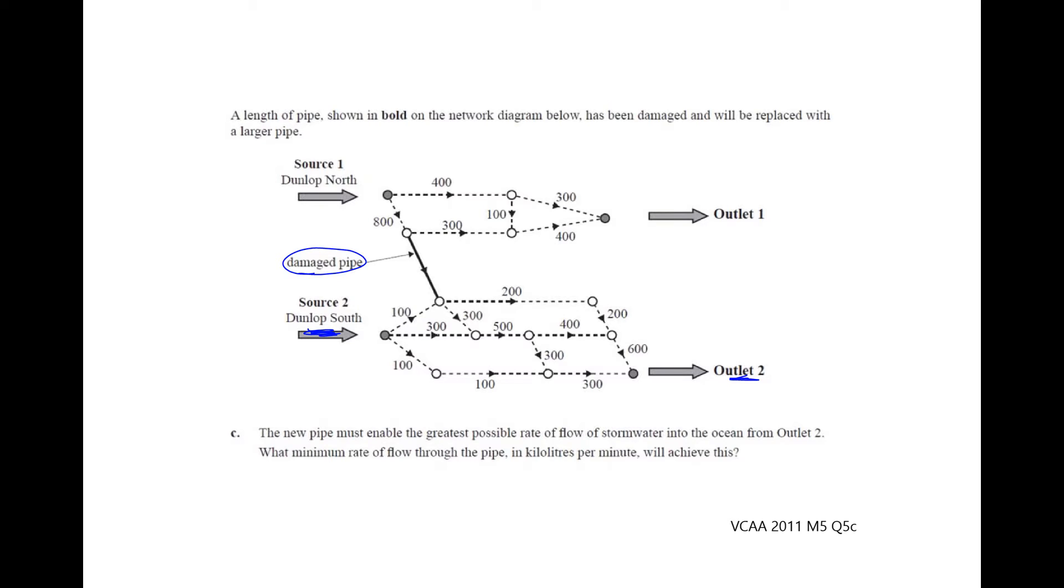Using our alternative method, we'll just work our way through with the pathways. So from source 2, if we go across the top, our smallest value there is 100, so subtract 100 from each of those values. And then a second pathway through, we can go through the middle, so across the 3, 5, 4, and down, and our smallest value there is 300.